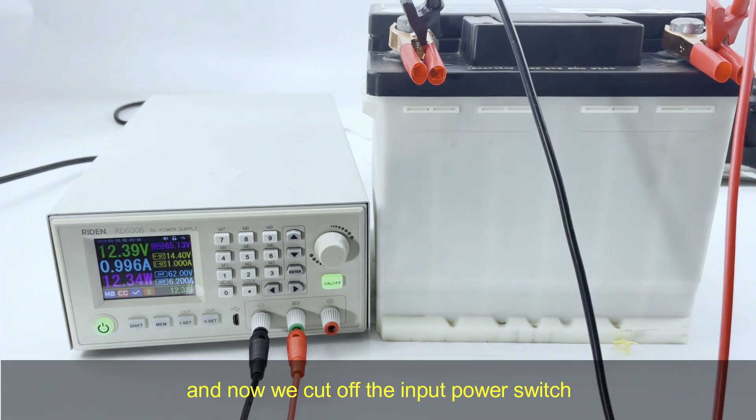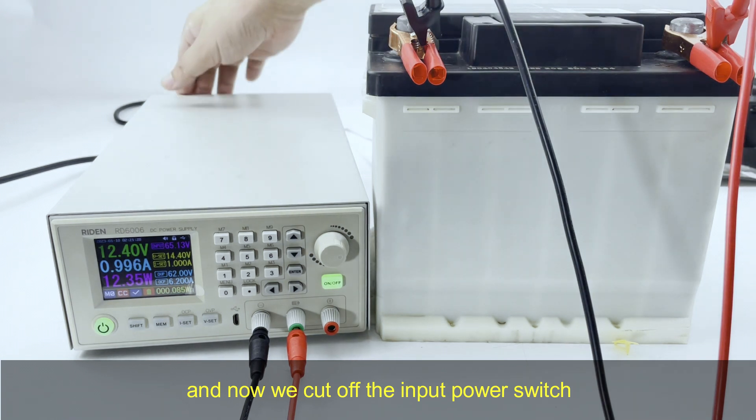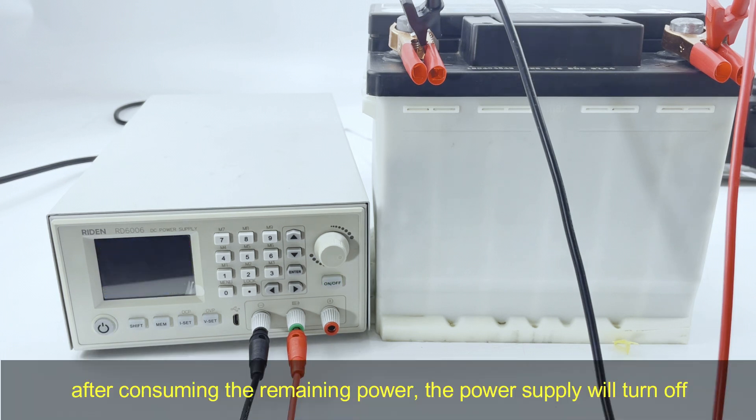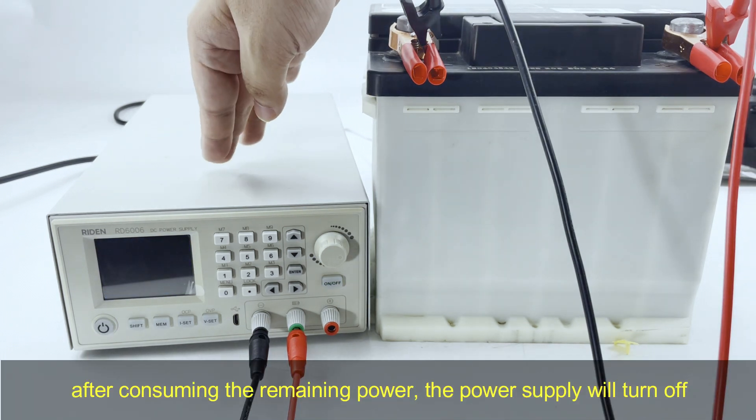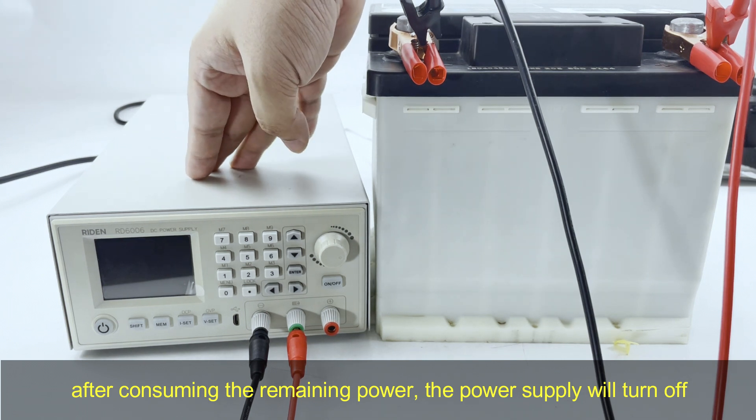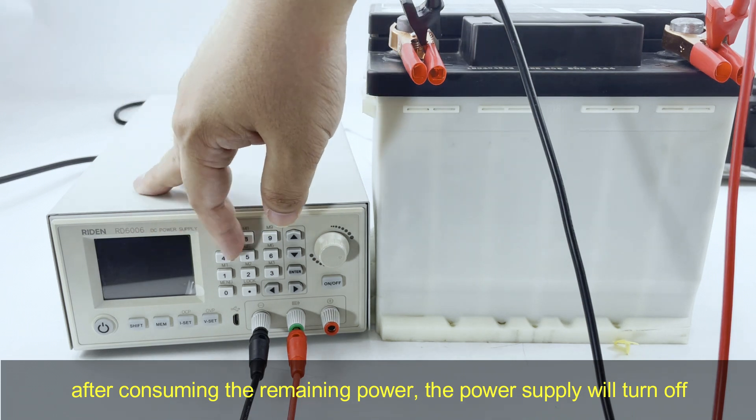The voltage will increase to the peak voltage and then turn to CV mode. OK, now we turn off the input power switch. After consuming all the remaining power, it will turn off.